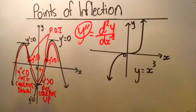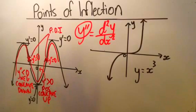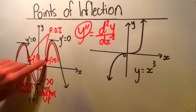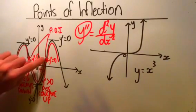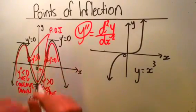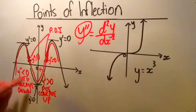At these points of inflection, the second derivative equals zero — there is no concavity. Notice that these two points of inflection would have gradients that are not zero. If I found the first derivative at this point, we can see it has a tangent with a positive gradient, and over here this tangent would have a negative gradient.